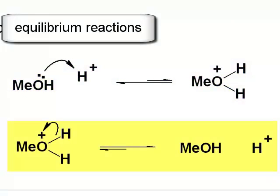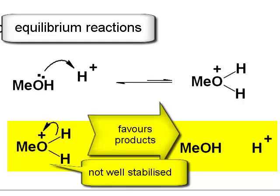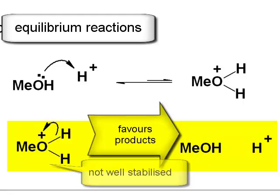And then we looked at the opposite way around of writing that reaction, starting from a protonated form of methanol, breaking an oxygen-to-hydrogen bond to produce the simple alcohol and a free proton. That's the reverse process, so now it is the right-hand side, the product side of that reaction, which is the more stable.